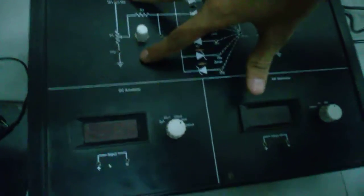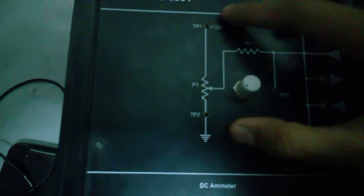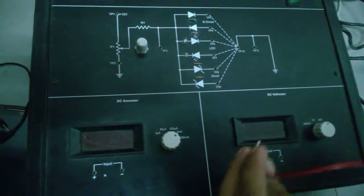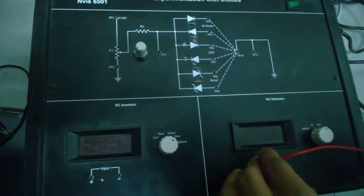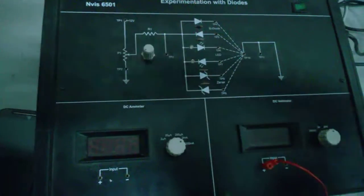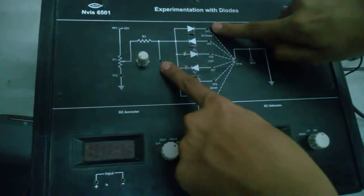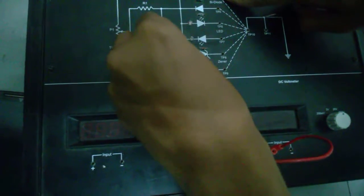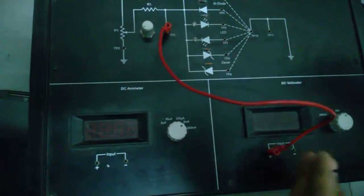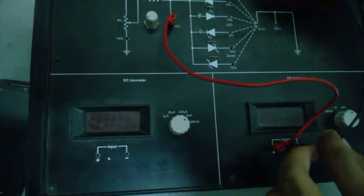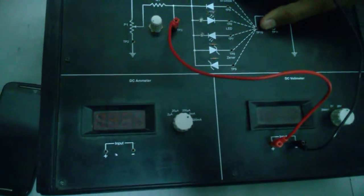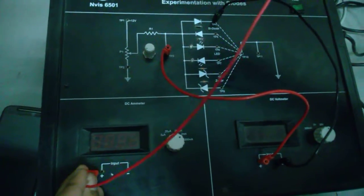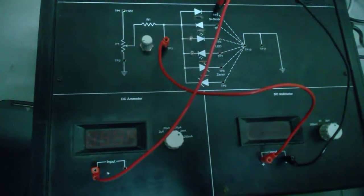Here we have input 12 volt which is automatically connected in this board. So we just have to connect the voltmeter in parallel with the diode. So I am using these two terminals for voltmeter to connect in parallel and these two terminals for ammeter to make it in series with the diode. So it is connected in series.